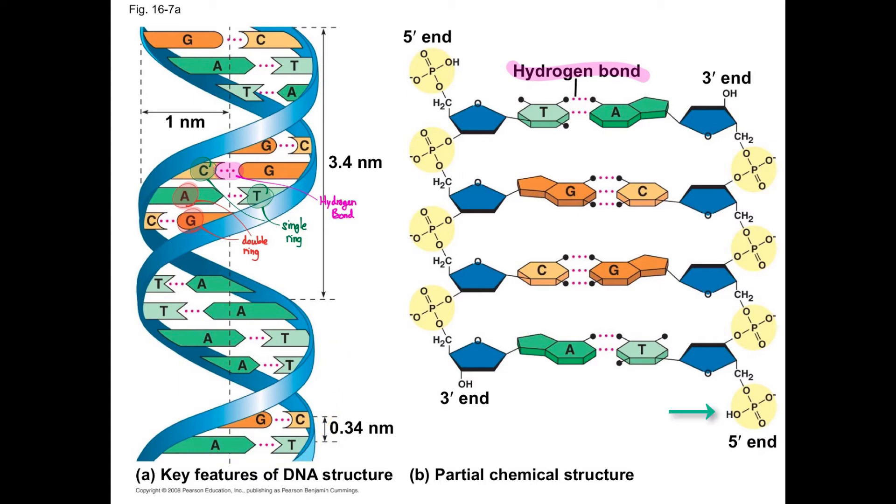The two DNA strands run anti-parallel to each other. One strand, the 5' strand, has a terminal phosphate group. The other strand, the 3' strand, has a terminal hydroxyl group.